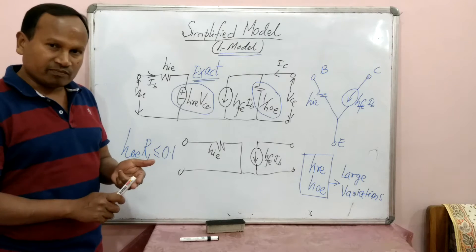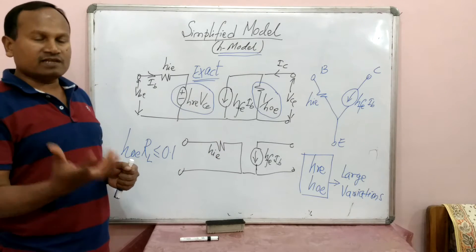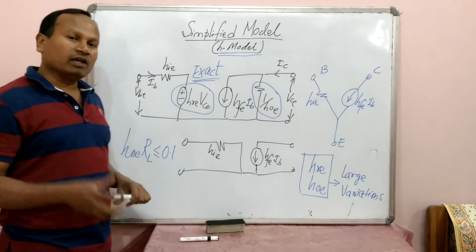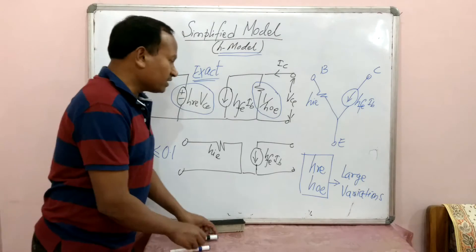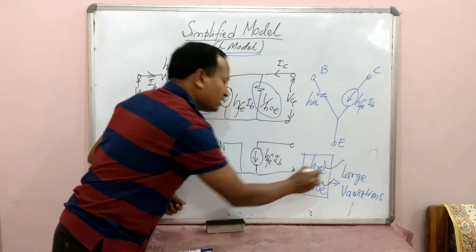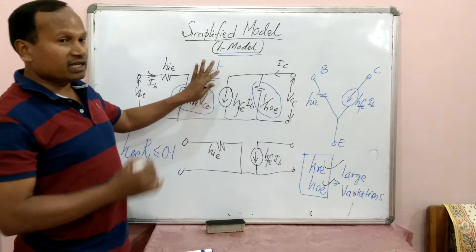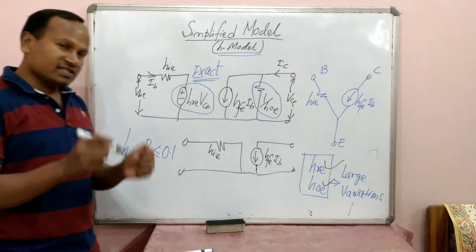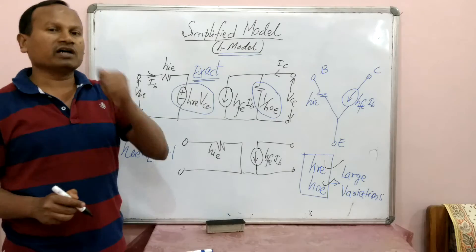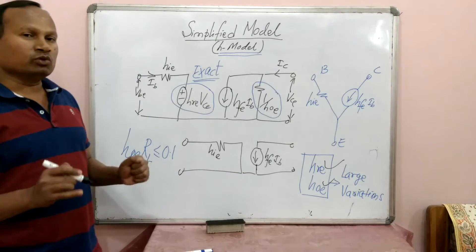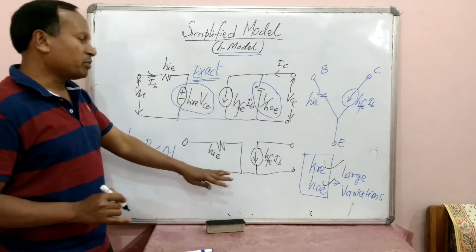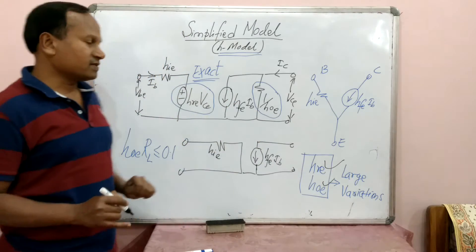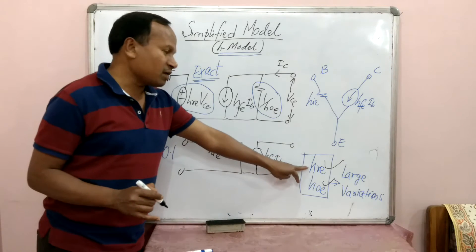Transistor aging and environmental conditions can affect parameters. If you look at the hybrid parameters, the large amount of variations are in HRE and HOE. Therefore, if we use this exact model in the further analysis of a transistor amplifier, the analysis will no longer be stable. So how can we address that? HRE is having a large amount of variation, so let us neglect it.